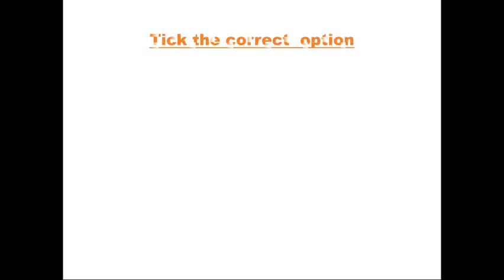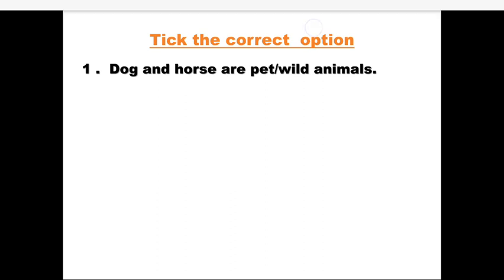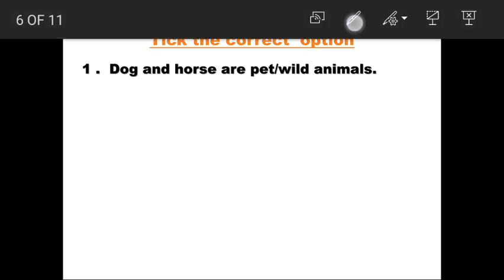Next is Tick the Correct Option. First: Dog and horse are pet animals or wild animals? Yes, very good — these are pet animals, so we tick pet animals.